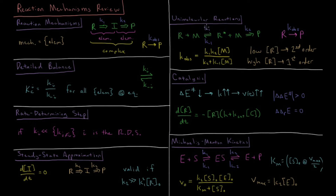The first application of the steady state approximation was in the mechanism for how a unimolecular reaction occurs. A unimolecular reaction would be something like a single molecule R going to a molecule P with some observed rate constant, and we want to know how this reaction occurs.